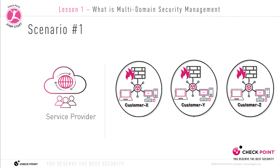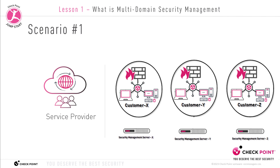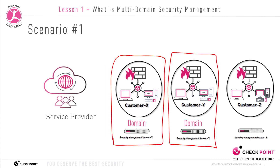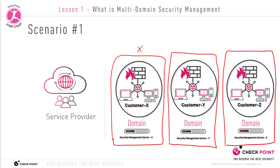The service provider manages three separate customers — X, Y, and Z — and needs to keep their data segmented and private. In a traditional Checkpoint architecture configuration, they would need three Security Management Servers, one for each customer. Each customer is a separate domain, so we have three customers, three domains — domain X, domain Y, and domain Z. We need three separate Security Management Servers to keep each domain's data separate for privacy and security reasons.